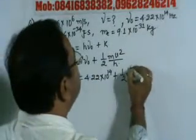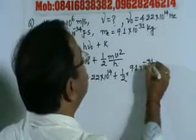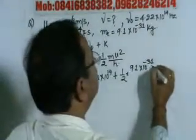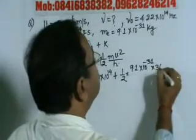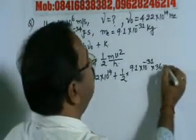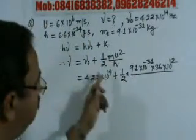Velocity of electron is 6×10^6 meters per second, squared that is 36 (since 6 squared is 36) into 10^12 for v².